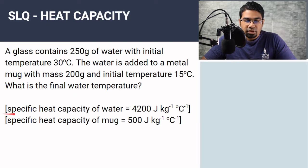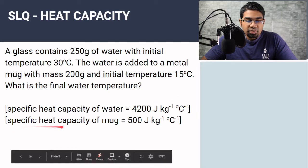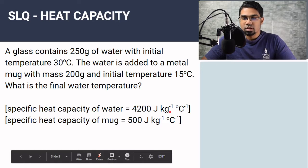They've given you the specific heat capacity of water: 4200 joules per kilogram per degree Celsius — very important to take note of the unit. The specific heat capacity of the mug is 500 joules per kilogram per degree Celsius.